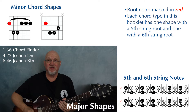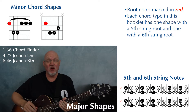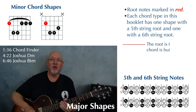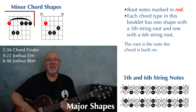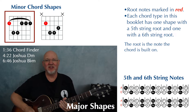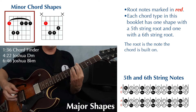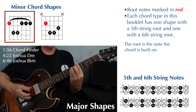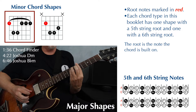At the top of page four we have two movable minor chord shapes — one with the root on the fifth string, one with the root on the sixth string. Let's take a look at the string six root first. Finger one, three, four, and then one, one, one.